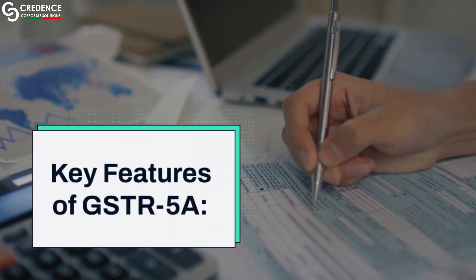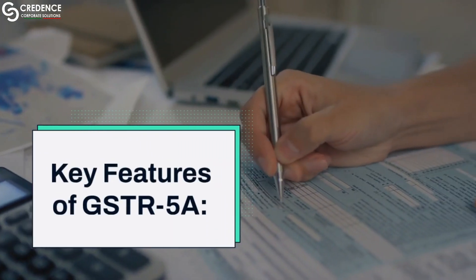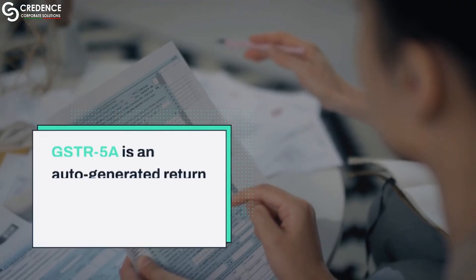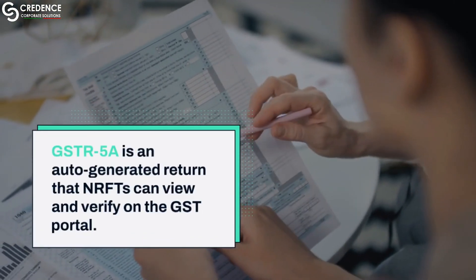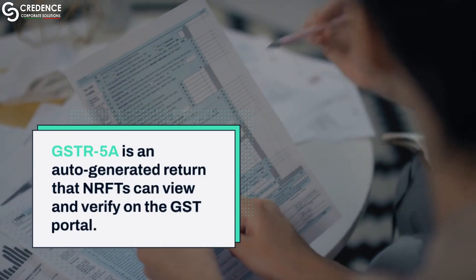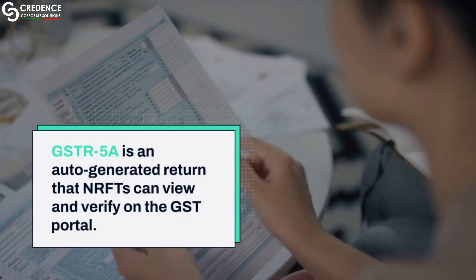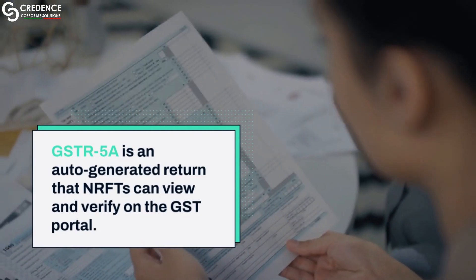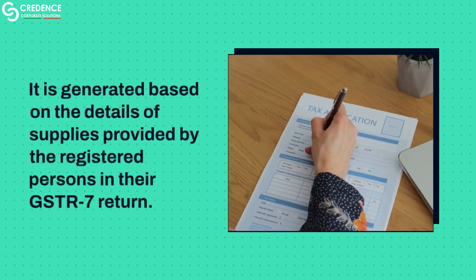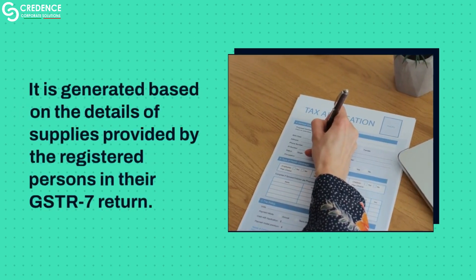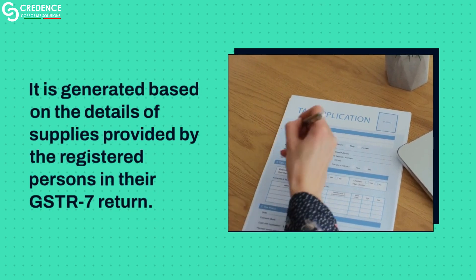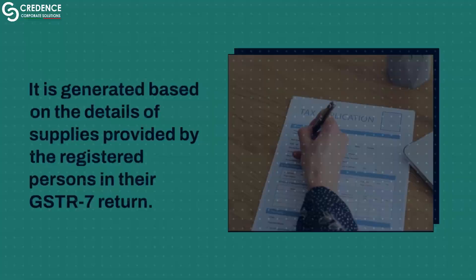Key Feature 1 — Auto-Generated Return: GSTR-5A is an auto-generated return that NRFTs can view and verify on the GST portal. It is generated based on the details of supplies provided by the registered persons in their GSTR-7 return.